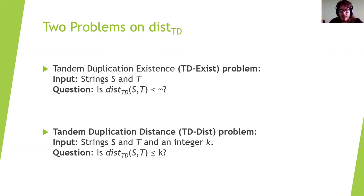Two natural problems arise from the definition of dist_td. The first is the tandem duplication existence problem, which we call TD-exist, which takes as input the strings s and t, and asks if dist_td between s and t is less than infinity — in other words, if it is possible at all to go from s to t with duplications. We saw before that this is not always possible, so it's not a trivial problem.